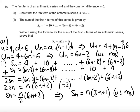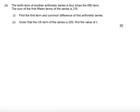Okay then, well let's have a look at part b. Part b says the tenth term of another arithmetic series is 4 times the fifth term. So we could write u10 equals 4u5. We're also told the sum of the first 15 terms of the series is 210. So the summation of the first 15 terms is 210.